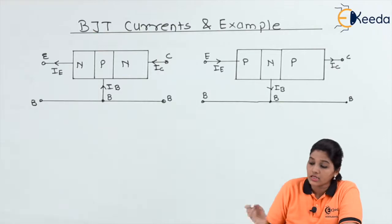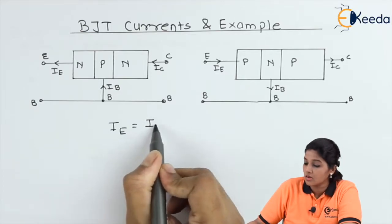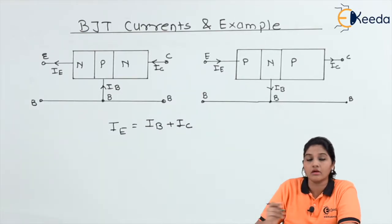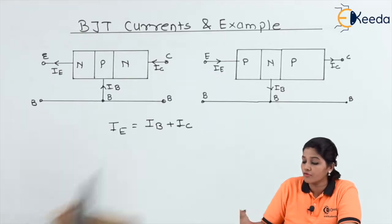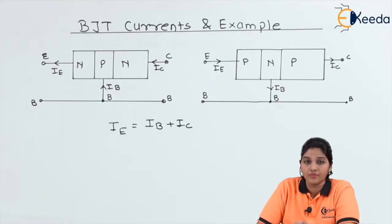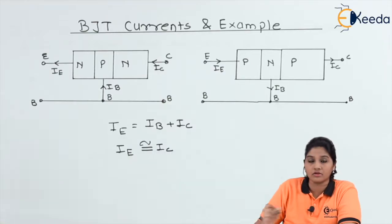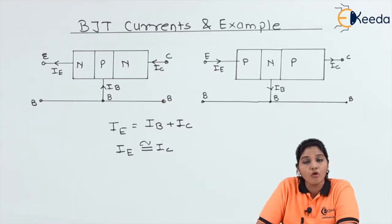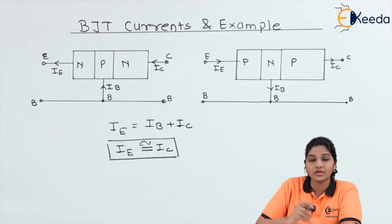We can say that in case of both NPN and PNP, the emitter current is basically the sum of base current and collector current: IE = IB + IC. But practically, as the width of the base is small in both NPN and PNP, the value of base current is approximately 2% of the emitter current and the value of collector current is approximately 98% of the emitter current. Therefore, we can say the emitter current is approximately equal to the collector current.